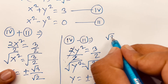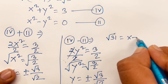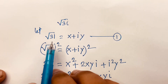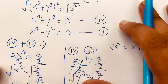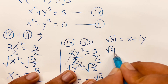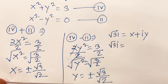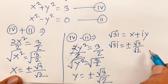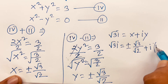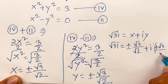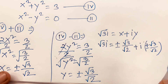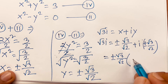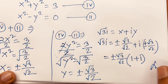Square root of 3i equals x plus iy. So it will be x equals plus or minus root 3 over root 2, and iy equals plus or minus i times square root 3 over square root 2. Then square root 3 over square root 2 is common, so it will be plus or minus square root 3 over square root 2 times (1 plus i). This is our final answer.